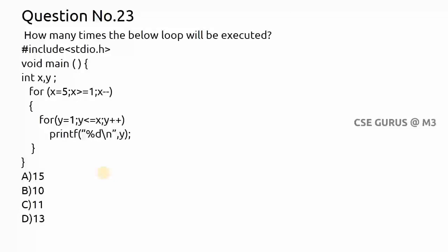Question 23: how many times will the following loop be executed? It's a nested for loop. The outer loop starts with x equals 5. For x equals 5, the inner loop runs y from 1 up to less than or equal to x — so y goes 1, 2, 3, 4, 5: five iterations. When y becomes 6, the condition is false.